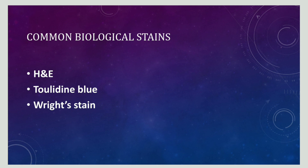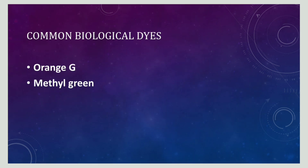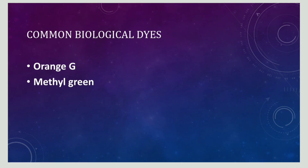Now let us discuss the commonly used biological stains. Examples include H&E, toluidine blue, and Wright stain. For commonly used biological dyes, examples include orange G and needle green. Apart from these, there are several other dyes and stains used for staining purposes. The concepts of stains and dyes and their differences should now be clear.